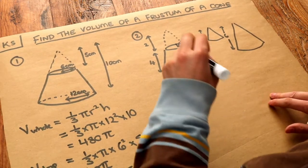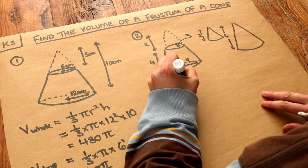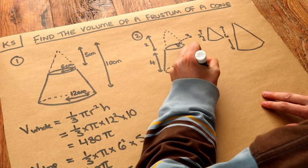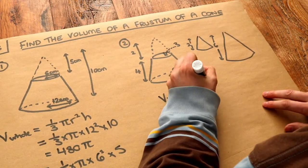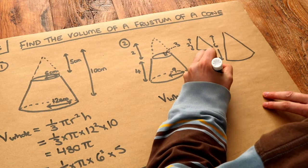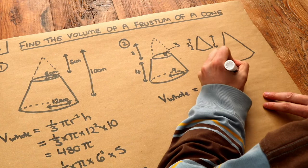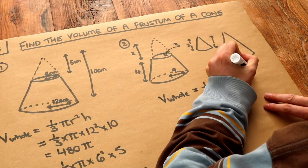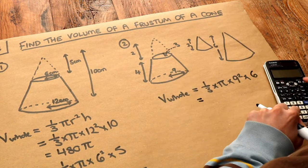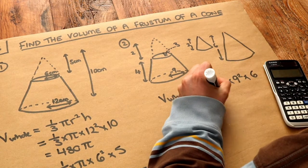So we can do exactly what we did before. Therefore, the volume of the whole cone is equal to one-third times pi times the radius squared, so 9 squared, times by the height, which is 6. And if we simplify that, we get 162 pi.